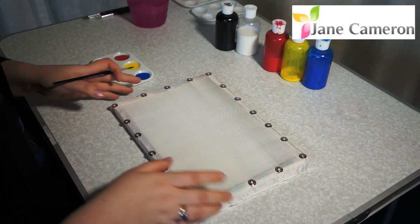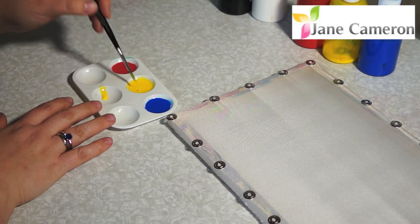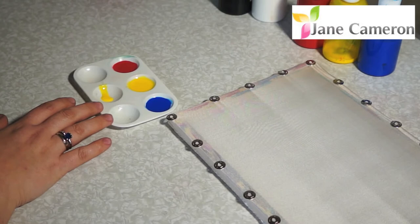So if I want to make, for instance, green, I will always start with the lightest colour. So I'll put some yellow into my palette there, wash and dry my brush.